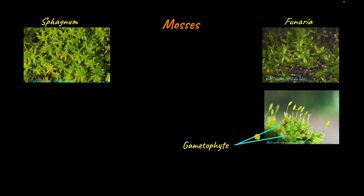When fertilization occurs, the diploid zygote forms the sporophyte inside the female gametophyte, which is the archegonium. As the sporophyte develops it erupts out of the female gametophyte. The sporophytes have a capsule inside which the spores are contained, a seta or stalk, and the foot which attaches the sporophyte to the gametophyte.